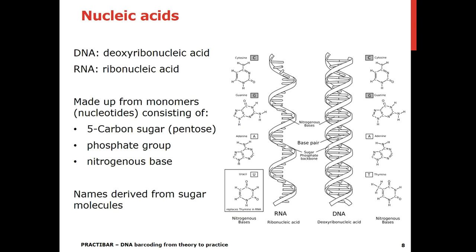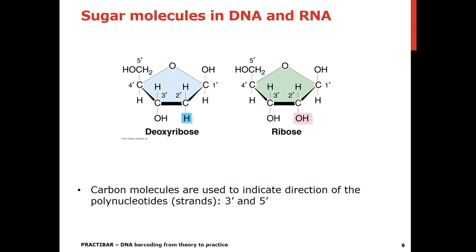The genetic information itself is stored in DNA or RNA, which stand for deoxyribonucleic acid and ribonucleic acid respectively. The molecules are made up from monomers or nucleotides, which consist of a 5-carbon sugar, a pentose, a phosphate group, and a nitrogenous base. The names of DNA and RNA are derived from the sugar molecules. The sugar in DNA is deoxyribose, and the sugar in RNA is ribose.